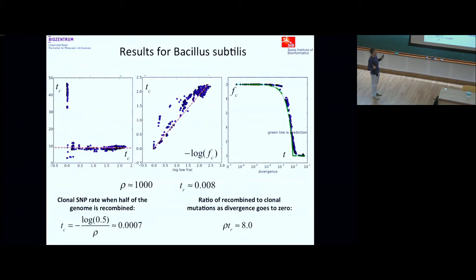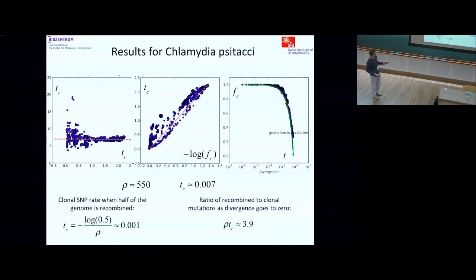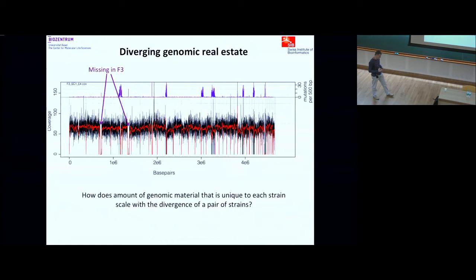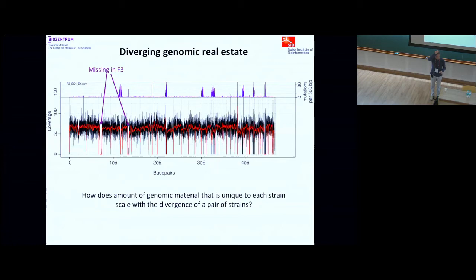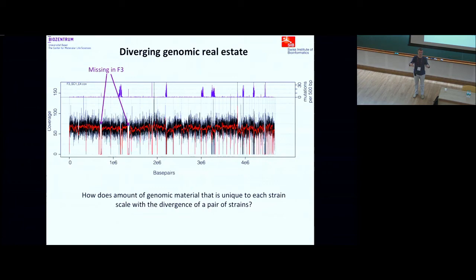You find comparable things for other species in the database. For Bacillus subtilis this ratio is 8, for Chlamydia the ratio is about 4, and for most species where we had enough data we see similar patterns. There are things like Mycobacterium tuberculosis where there are good reasons to think it should not recombine much — it only lives inside hosts — but we still see evidence of recombination. I believe that for most bacteria, recombination really drives genome divergence.